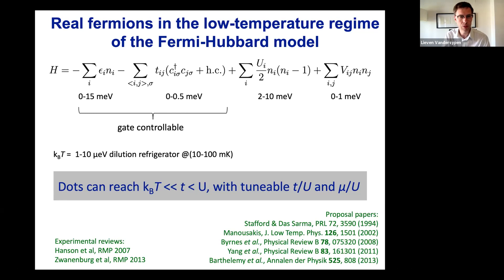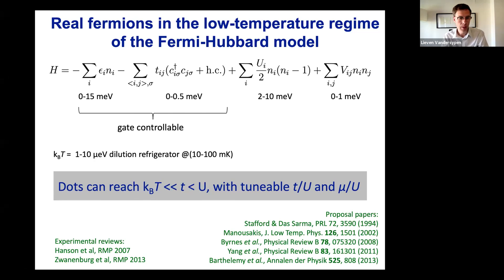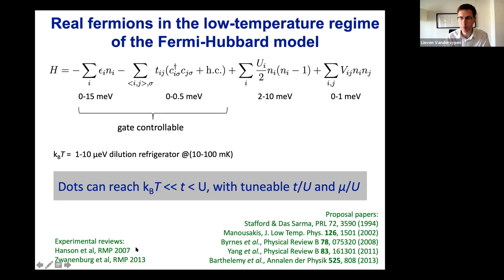Another consideration is the range of energy scales that are accessible. The dilution refrigerator temperature is below 10 millikelvin, so about one microelectron volt. If you filter your wires well, your electron temperature actually comes in the same ballpark. That allows us to go to the most interesting part of the phase diagram, where the thermal energy is much below the hopping, and where the hopping is still well below the on-site interaction energy. The hopping and the local potentials are tunable by gate voltages.